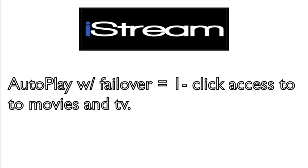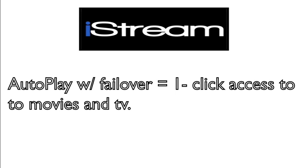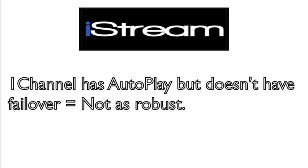Autoplay is the feature that gives you one-click access to movies and television shows. Normally after selecting a movie you have to pick from a list of sources, and in some cases do it a couple of times before your program actually starts. With autoplay enabled, the process of selecting from sources is automated — you simply click on your selection, wait for it to sort through the list, then your movie starts.